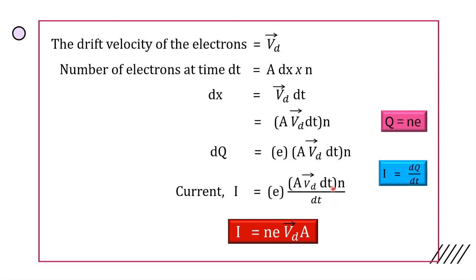And dt gets cancelled. So we have n, e, Vd, A.